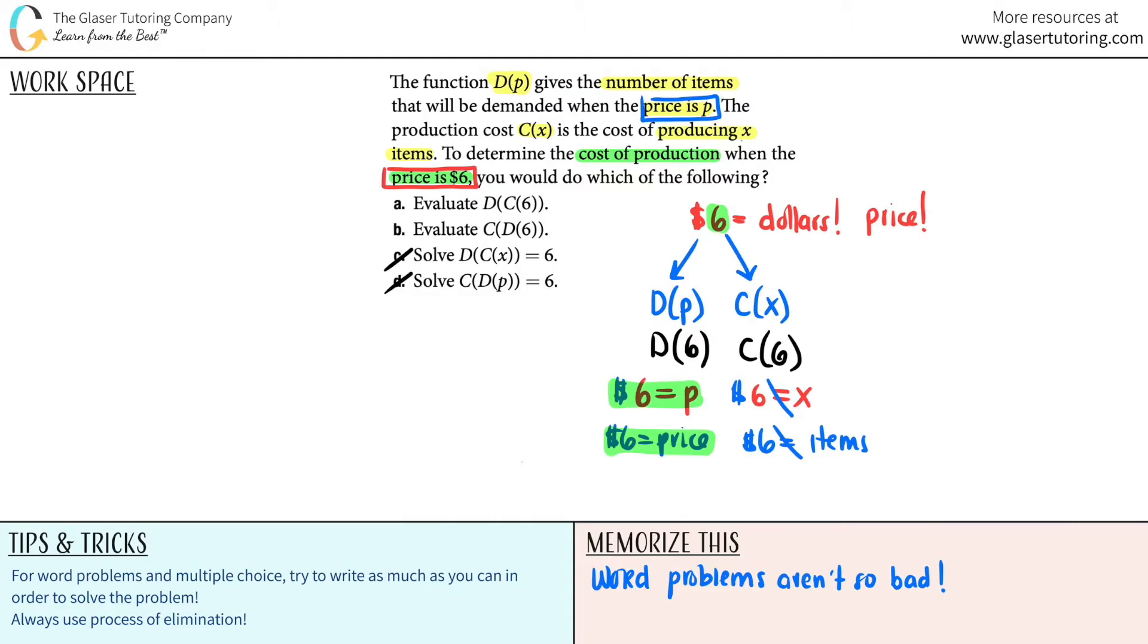So now you're down to a and b. And by what we just did, we know that the 6 goes into the d function. So this is the part that's correct. The 6 does not go with the c function. And then from there, do you see how this overall d function equals the number of items? And do you see how if we said c of d of 6, this overall function equals the number of items?